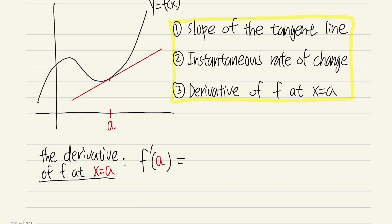So first let me pick another point on the curve somewhere right here, and I'm going to label it as some x value. Then I will connect the dots between the red and the blue points.